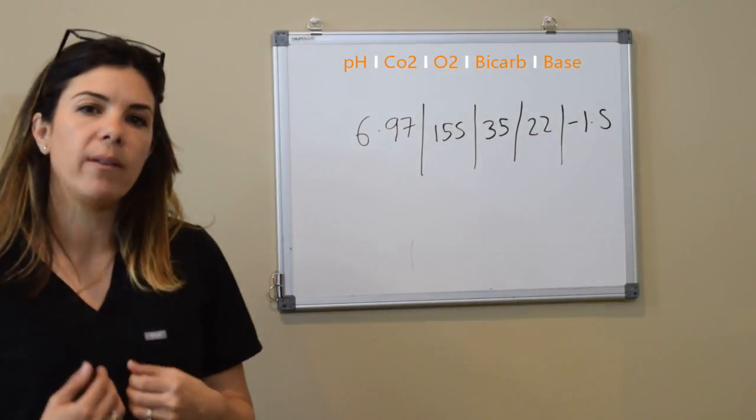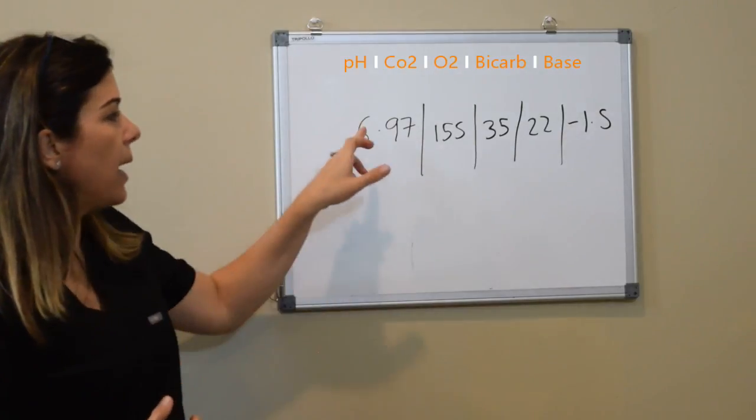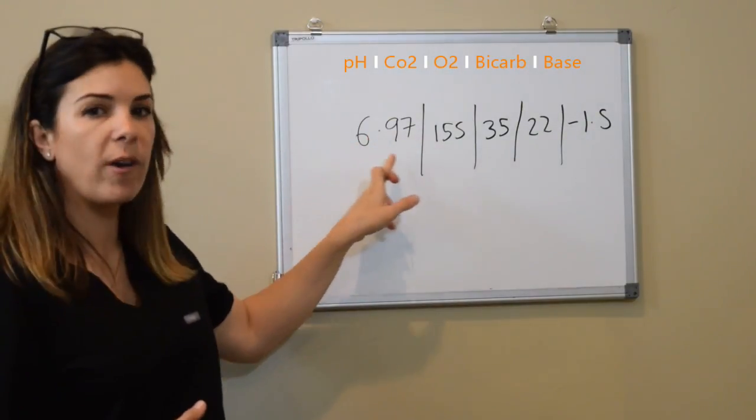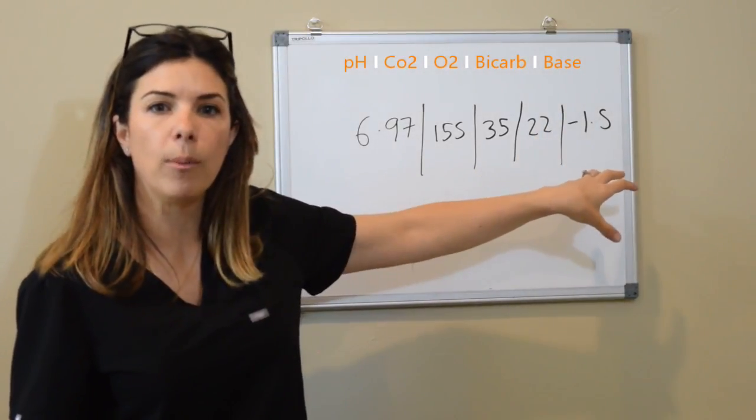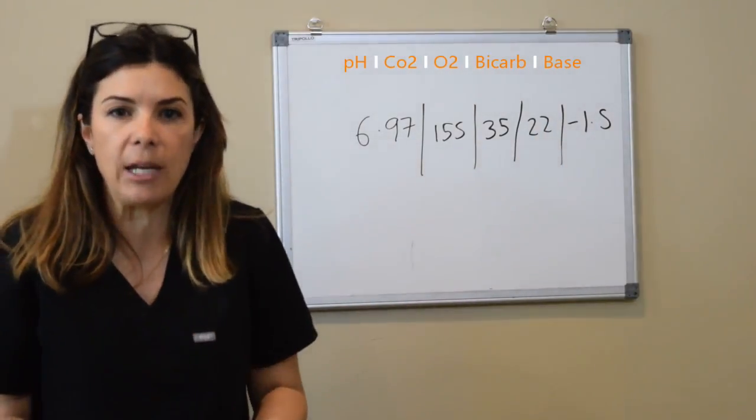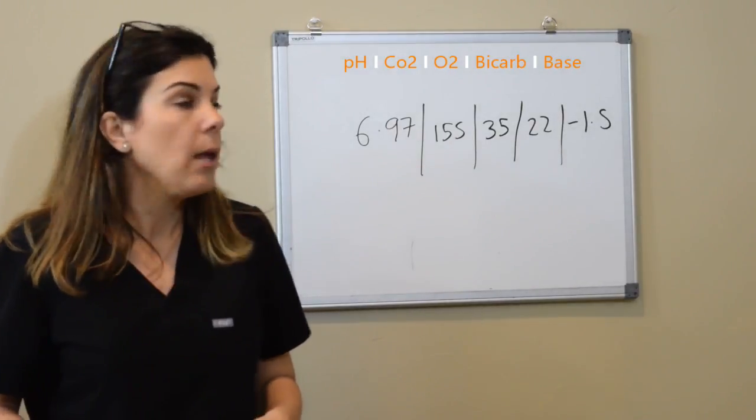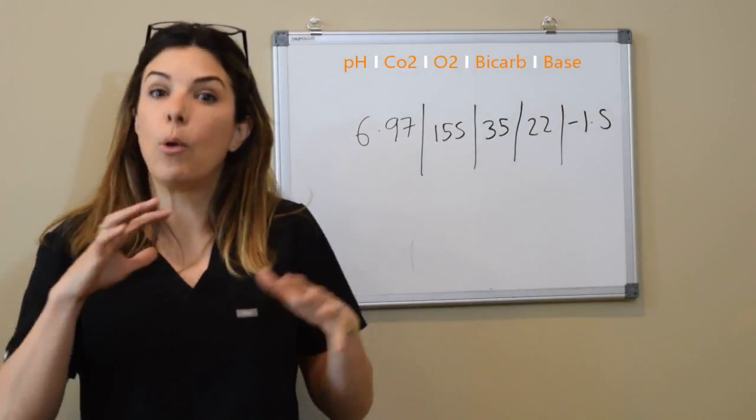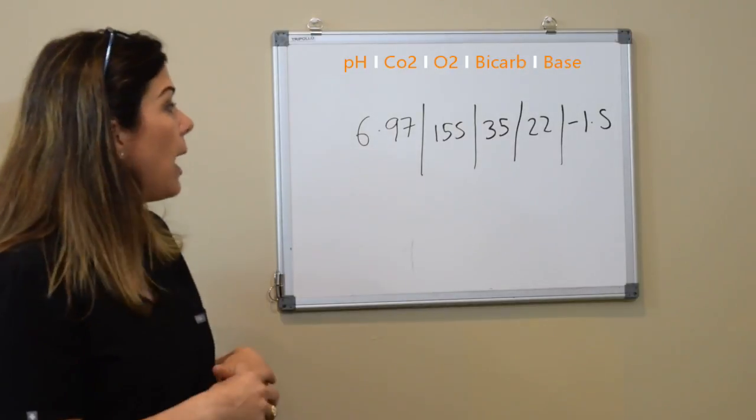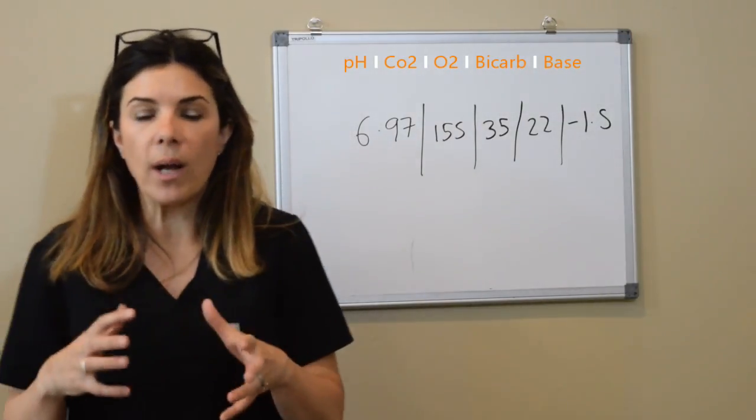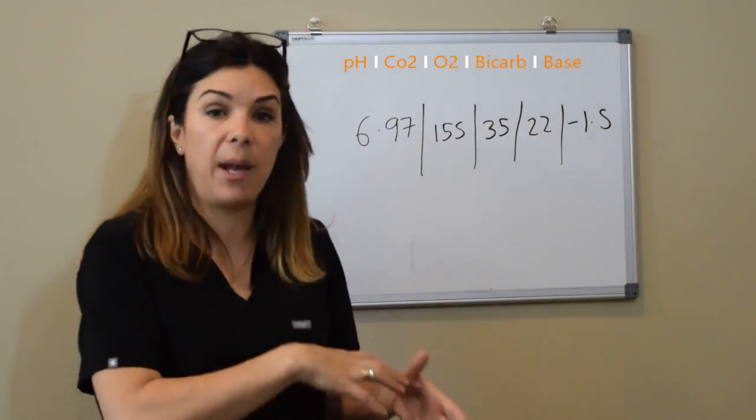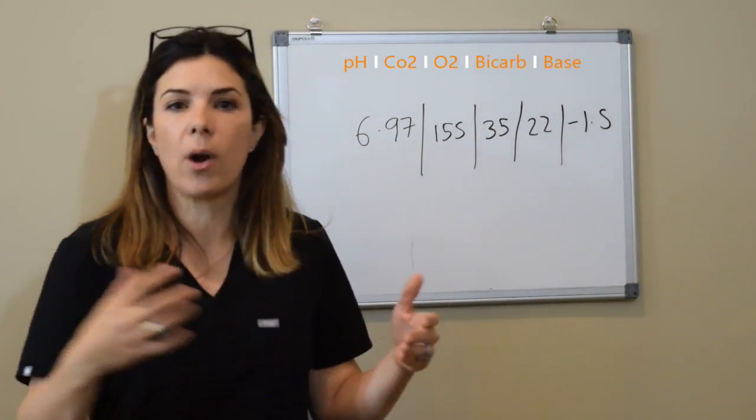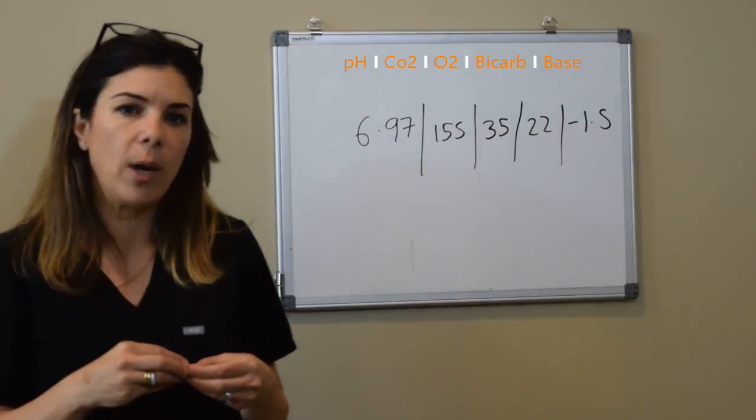So what can we say about this? We have an acidosis which is respiratory, but our base is completely normal. There is no compensation by the kidneys. So normally, as we all learned in the last videos, if you do have one system going completely one way, then generally the other system, if it can, will go the other way trying to correct it.